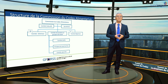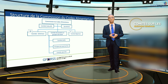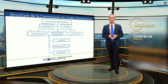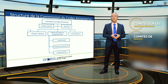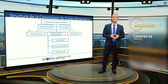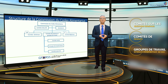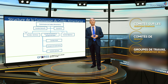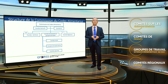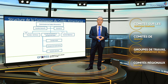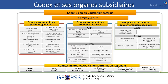Comme nous l'avons examiné plus tôt, nous avons dix comités sur les questions générales, plusieurs comités de produits — certains sont actifs et plusieurs ne le sont pas, donc ils sont ajournés. Le cas échéant, nous pouvons avoir des groupes de travail intergouvernementaux ad hoc et bien sûr, nous avons les six comités régionaux FAO-OMS. Voici la structure générale suite à la 46e session de la commission du Codex Alimentarius, tenue en novembre 2023, qui a vu d'ailleurs la commémoration du 60e anniversaire du Codex.